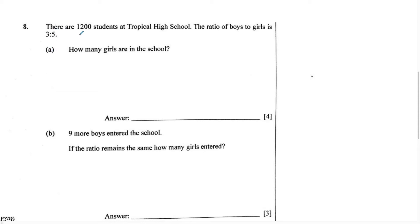This question says there are 1,200 students at Tropical High School. The ratio of boys to girls is 3 to 5. Part A: how many girls are in the school? Let's read the question again to see what information they give us. There are 1,200 students at Tropical High School. The ratio of boys to girls is 3 to 5. And for part A, they would like us to find how many girls are in the school. You might be wondering how we're supposed to find out how many girls if they didn't tell us how many girls.